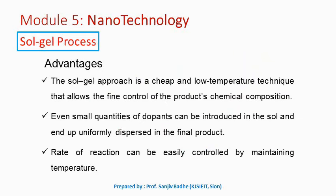The sol-gel process is a bottom-up process. Its advantages are: it is a very cheap and low-temperature technique; it allows fine control over the product's chemical composition; with this technique, we can add small quantities of dopants which are uniformly distributed in the final product; and the rate of reaction can be easily controlled by maintaining a suitable temperature.